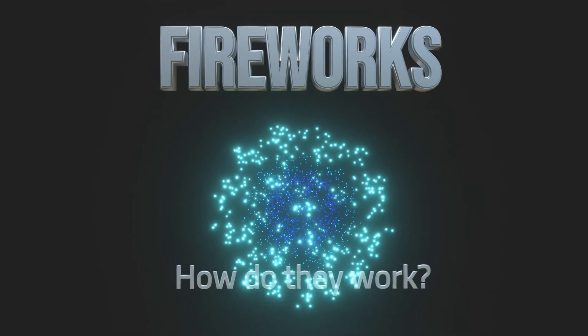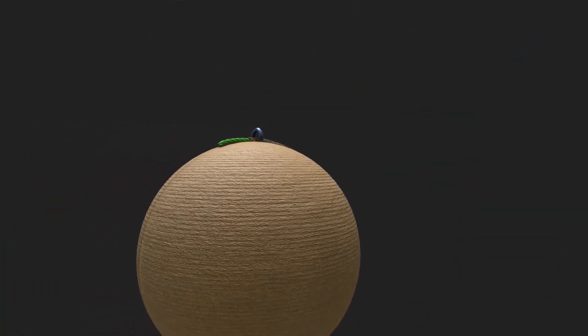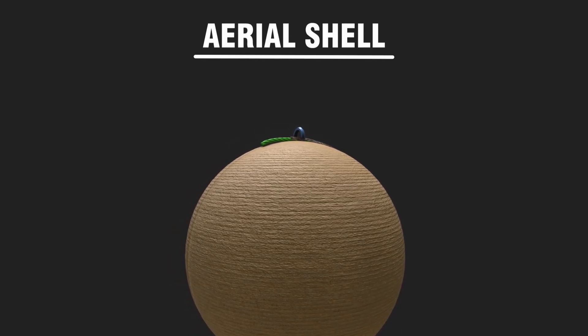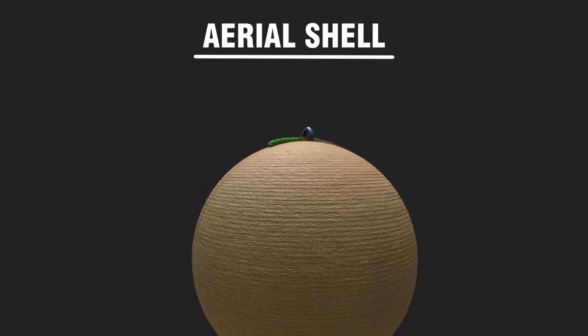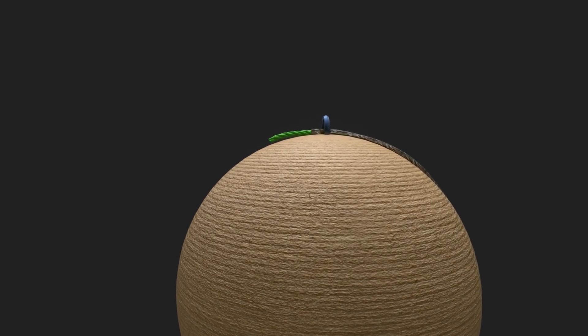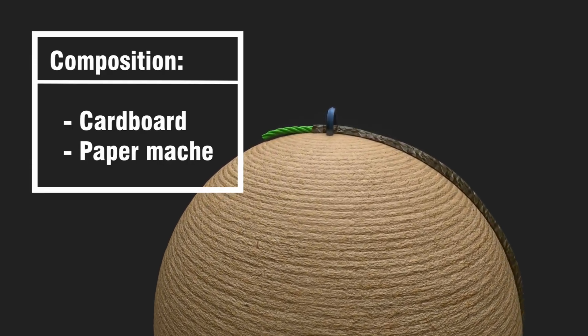Fireworks. How do they work? This is a model of an aerial shell, a typical firework used by pyrotechnicians, which are firework experts. Shell casings are assembled using cardboard and paper mache.